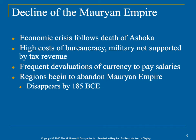The decline: an economic crisis follows the death of Ashoka. There's a high cost of bureaucracy and the military is not supported by tax revenue, which again is an ongoing issue we'll see. The currency devalues, and when currency loses value, that's usually a bad sign in an economy — it means the money is not worth as much as it was before. Basically, this empire collapses in about 185 BCE.